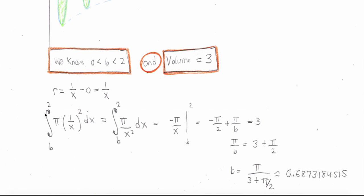So I set up the problem. The integral from b, that's the unknown, to 2 of pi r squared is equal to integral from b to 2 of pi over x squared dx.